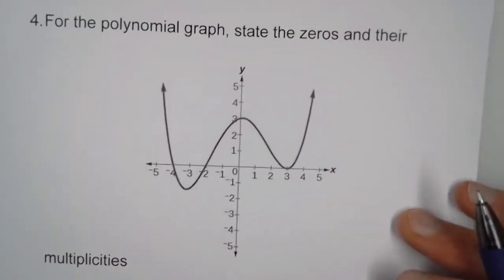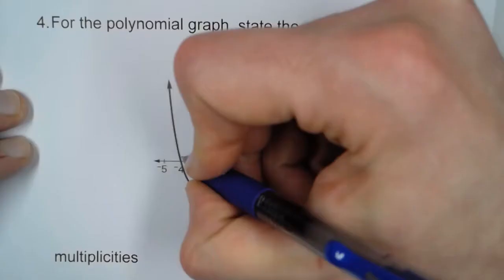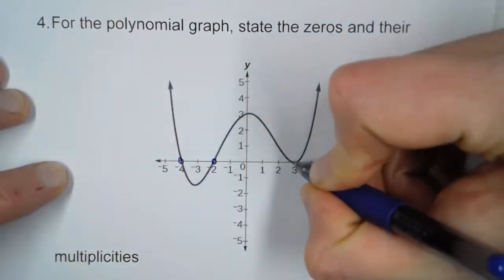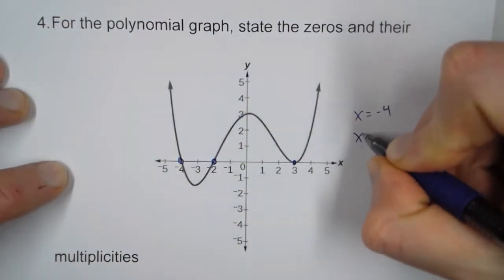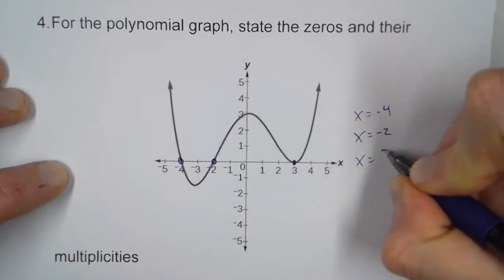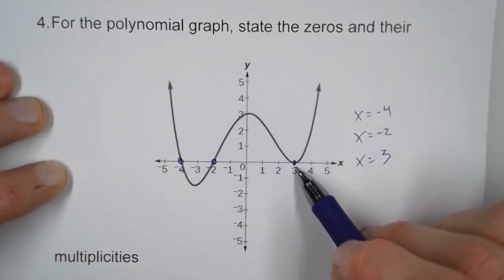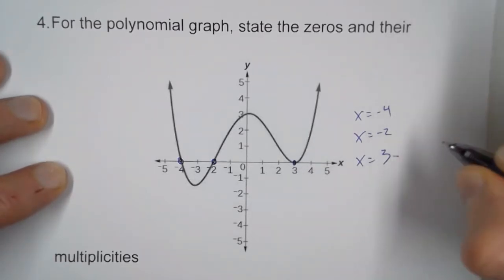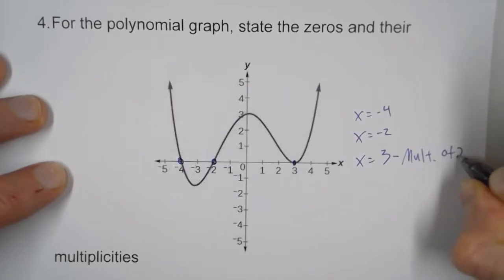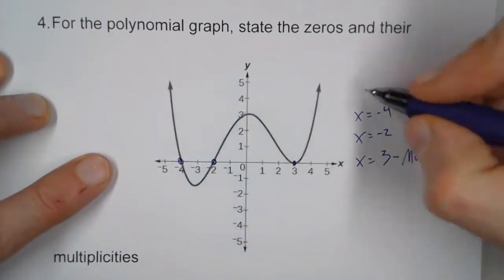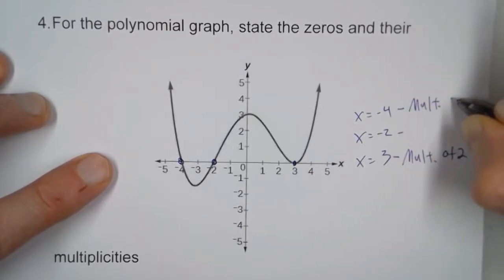For number four, we have a graph and we want to state the zeros and their multiplicities. We have three locations where this graph touches the x-axis: x equals negative four, x equals negative two, and x equals three. Now when it touches the x-axis like this and bounces, it mimics an x-squared graph, which means this has a multiplicity of two. Whereas when it crosses through the x-axis at negative four and negative two, those are multiplicities of one.